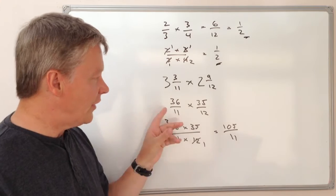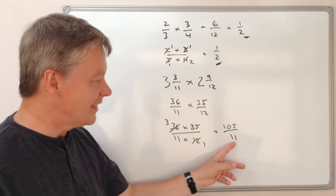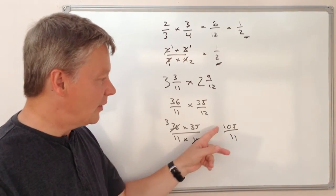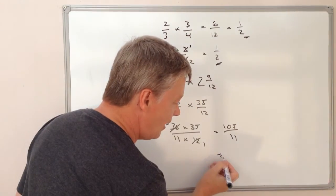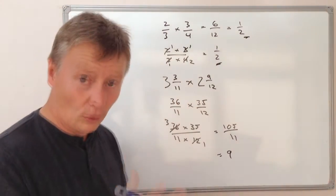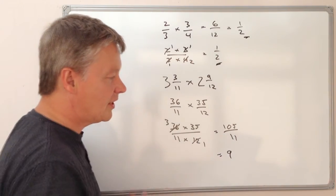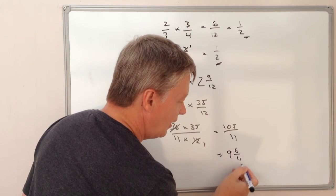So I need to convert that back into a mixed number. What I do know is that 10 times 11 is going to be 110. Well, I've only got 105 to play with. So actually it's going to be 9 full holes, if you like, and then the bit that's left. 9 times 11 is 99, and the bit that's left is going to be 6 elevenths.